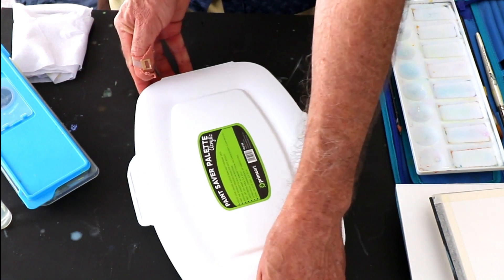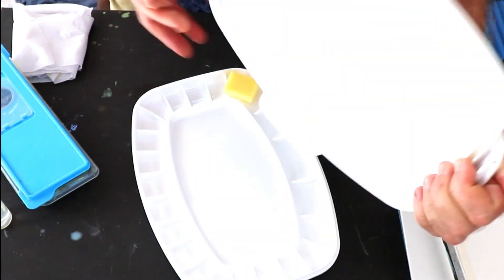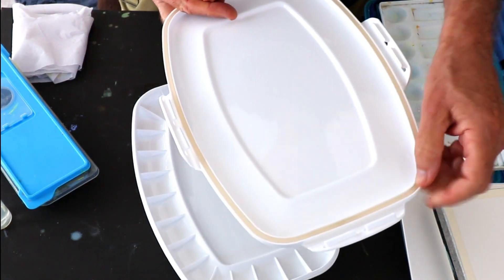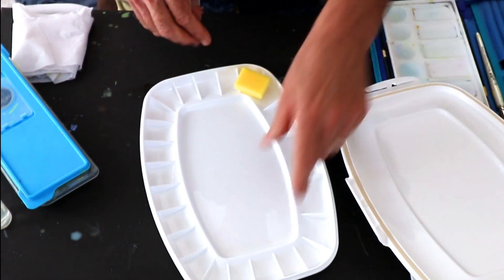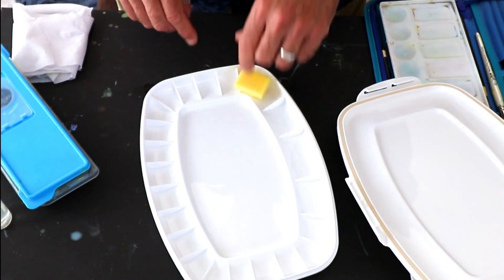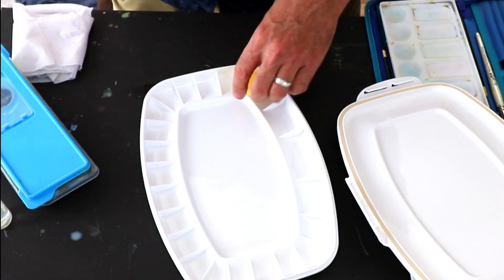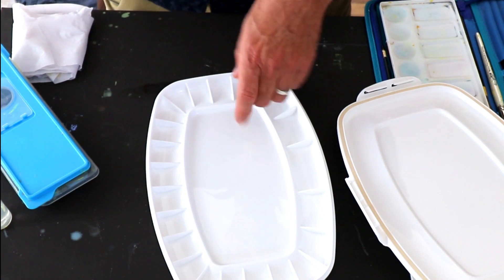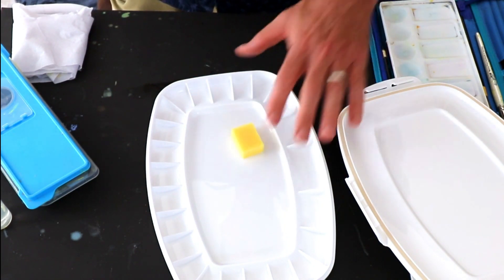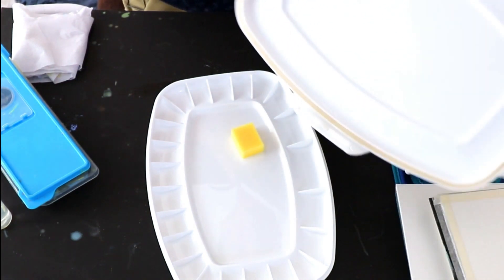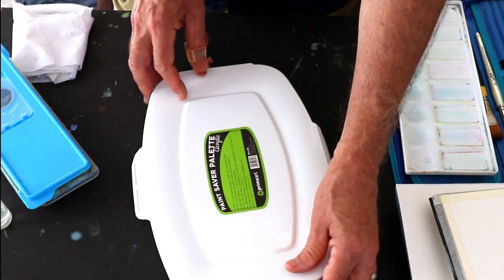So this is a very nice palette because it's got a lid sealed with rubber to make a good airtight seal. Lots of compartments to work on and some nice mixing space. And when you're done, just wet the sponge, put it in there which will condense and keep things moist inside and get the lid on correctly.